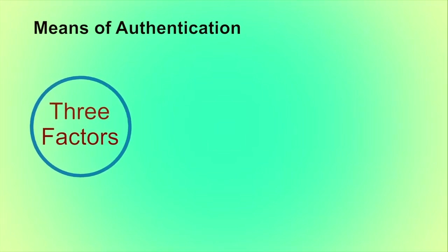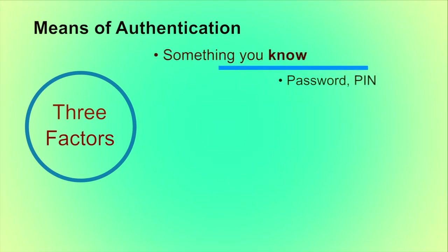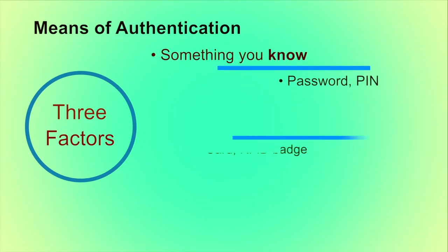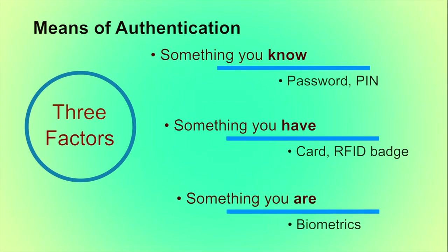What are the means of authentication? Traditionally, there are three means of authentication. First, something you know, like a password or PIN number. Second, something you have, like an ID card or RFID badge. And last, something you are, like biometrics. All of these methods, if properly implemented and used, can provide secure user authentication.